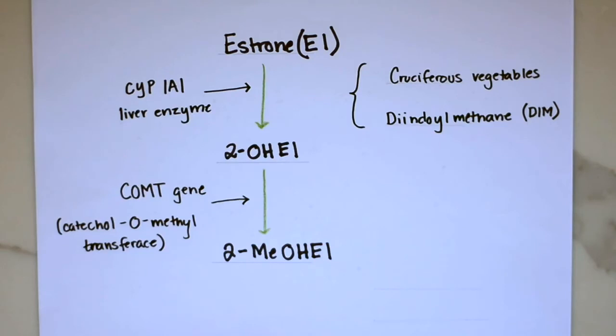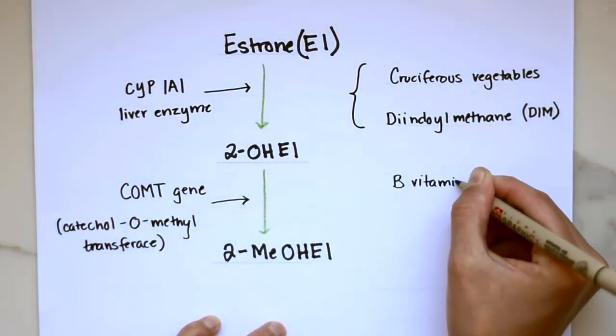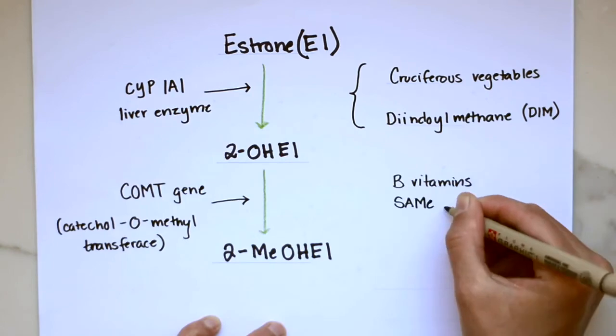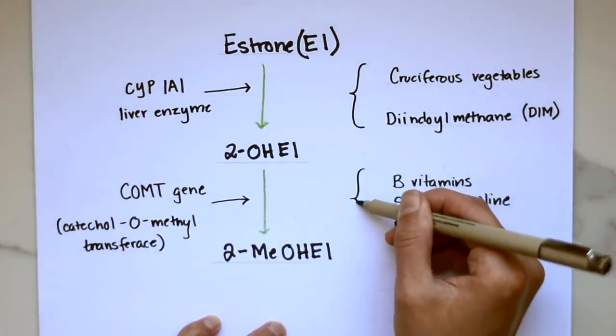So to support methylation, we can use various methyl donors and some of the common ones we see are B vitamins, SAMe and choline, and as well as other nutrients required such as magnesium.